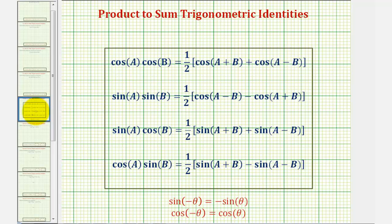For a quick review, here are the product to sum trig identities. We'll be using these first two where we have cosine A times cosine B and sine A times sine B.